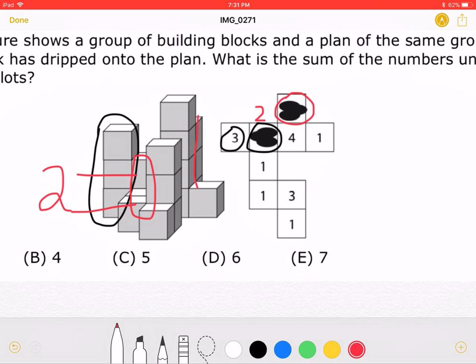That corresponds with this over here. And we can see that that is equal to 3 blocks. That means that 3 must have been here.